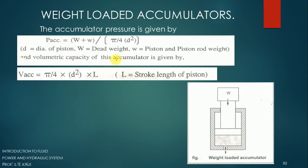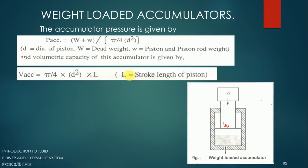The pressure developed can be calculated as: Pressure = Force / Area. The force acting here is the sum of the dead weight W (capital) and the weight of the piston and piston rod w (small w), both in Newtons (convert from kg if necessary). The area is (π/4) × d², where d is the diameter of the piston. The volume of fluid stored is (π/4) × d² × L, where L is the stroke length of the piston.